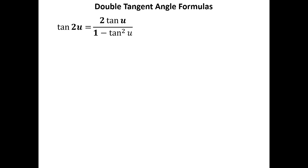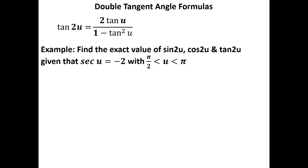The tangent double angle formula is the ugly one of the group because it deals with a fraction: the tangent of 2U is equal to 2 times the tangent of U all over 1 minus the tangent squared of U. The type of problem we'll have to deal with is finding the exact value of a trig function given a certain situation. For example: find the exact value of sine of 2U, cosine of 2U, and tangent of 2U, given that the secant of U equals negative 2, with pi over 2 less than U less than pi. This part tells us what quadrant we're in — since we're between pi over 2 and pi, we're in quadrant 2.